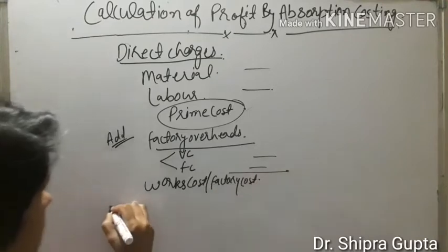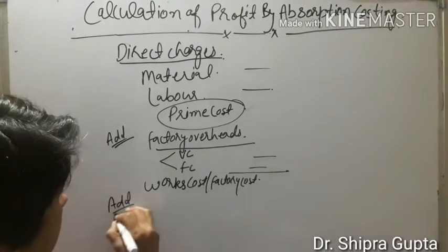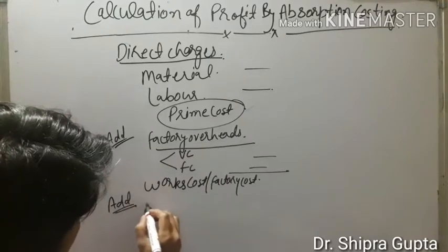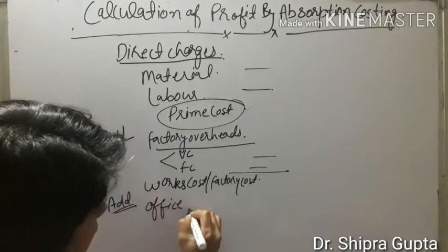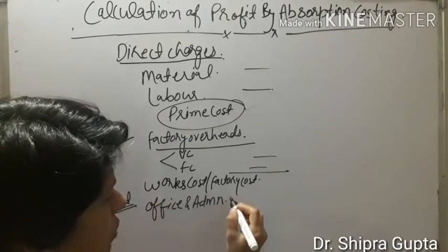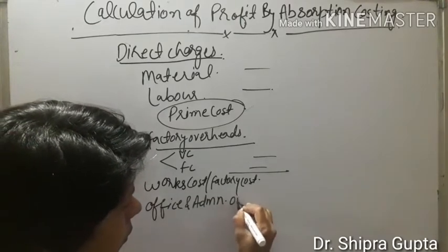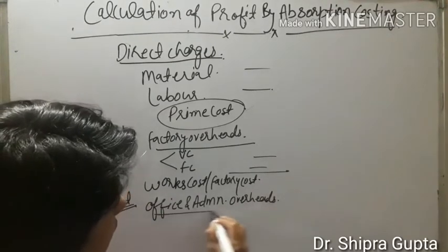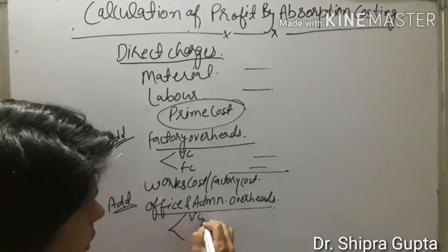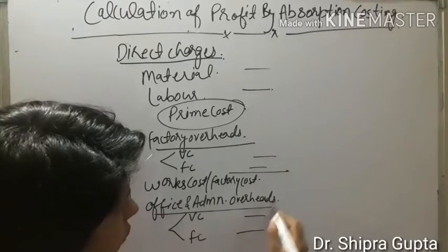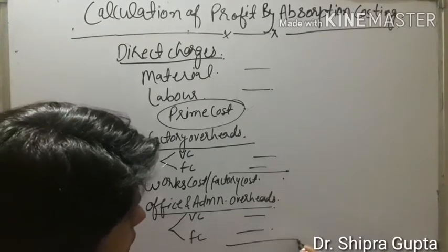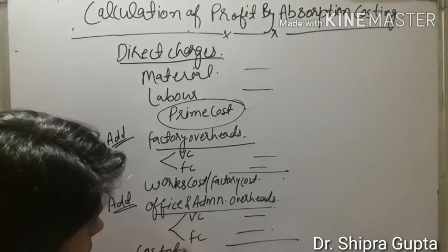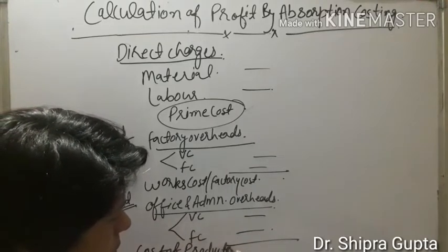Then we further divide and include office and administration overheads, again split into variable cost and fixed cost. The total of works cost plus office and administration overheads is known as cost of production.